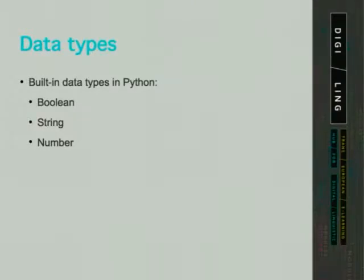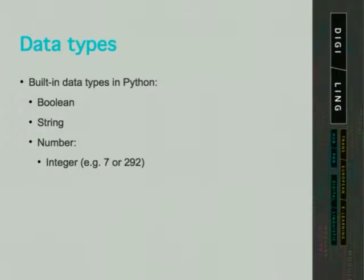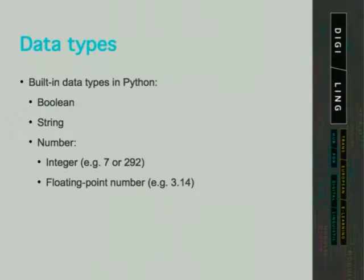The basic built-in data types in Python are numbers, strings, and booleans. Numbers can be divided into integers and floating point numbers. Integers are numbers that can be written without a fractional component, like 7 or 292. Floating point numbers are real numbers — that is, numbers written with a fractional component, like 3.14.